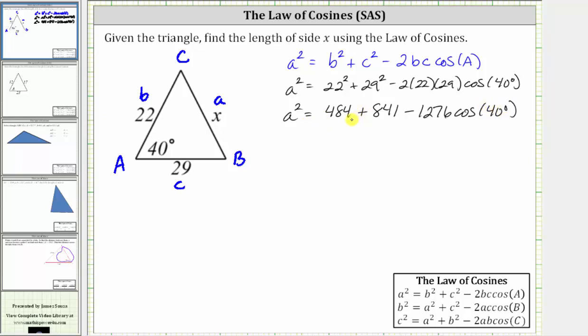484 plus 841 equals 1,325, giving us a squared equals 1,325 minus 1,276 cosine 40 degrees.